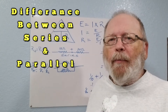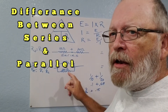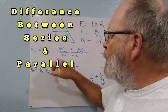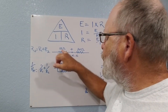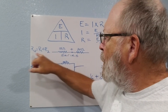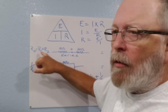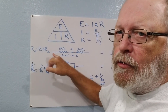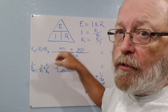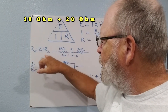Now we're going to talk about resistors in series and in parallel and how they differ. If you have two resistors — say a 10 ohm and a 20 ohm resistor in series — the formula is total resistance equals R1 plus R2, or however many you have. You could have three, four, five in there and it'll just keep adding up.